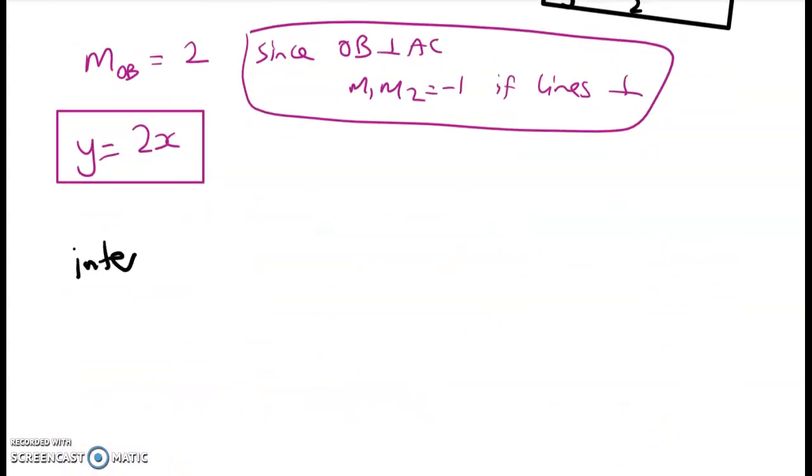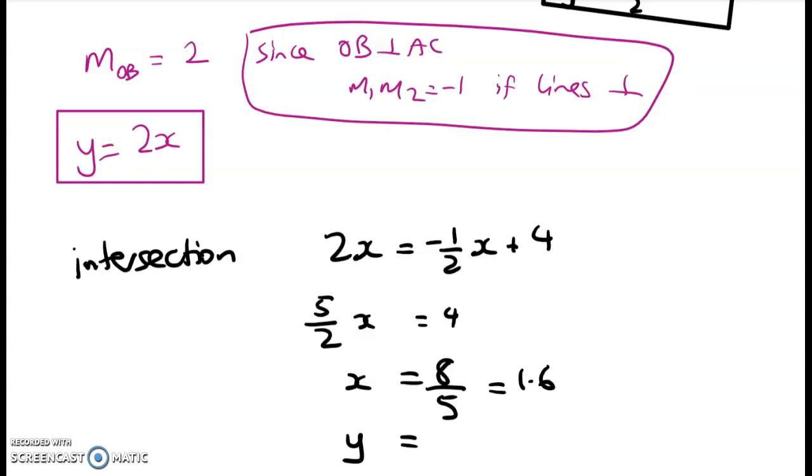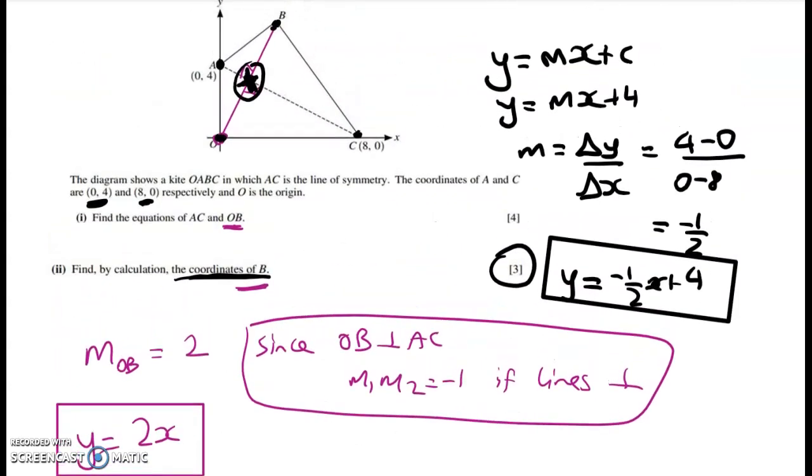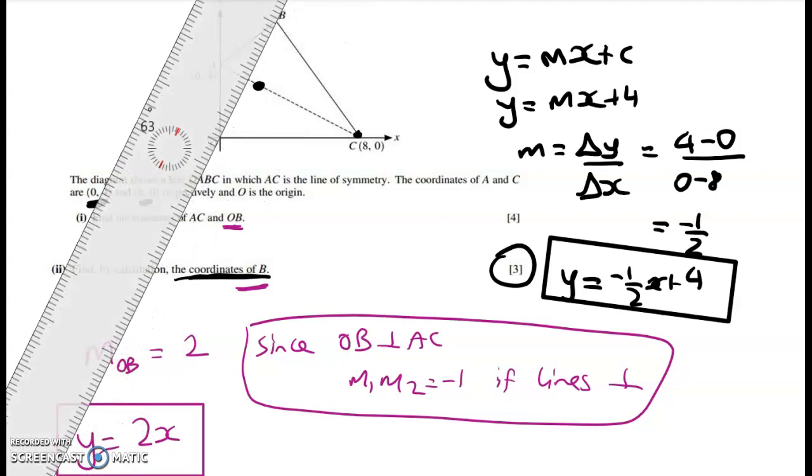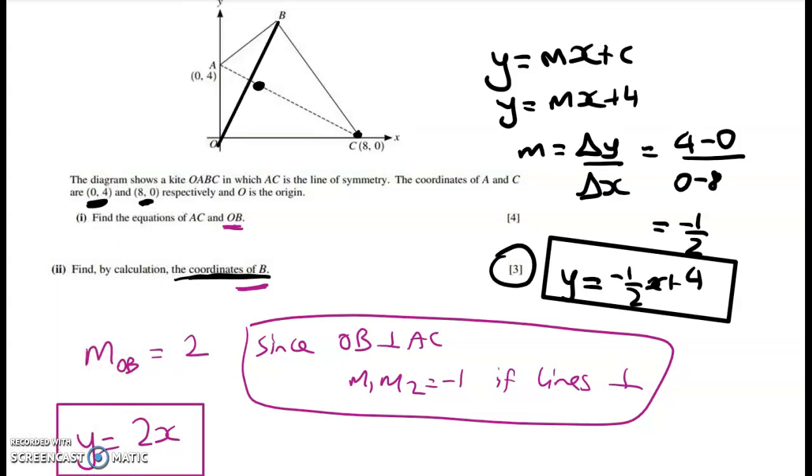And then I can use the fact that this is the midpoint. So the intersection is where we've got 2X is equal to negative 1 half X plus 4. That gives me 5 over 2X equals 4. X is equal to 8 over 5 or 1.6. And Y must be twice that. So Y is equal to 3.2. Now that means that we've got the coordinates of this point here.